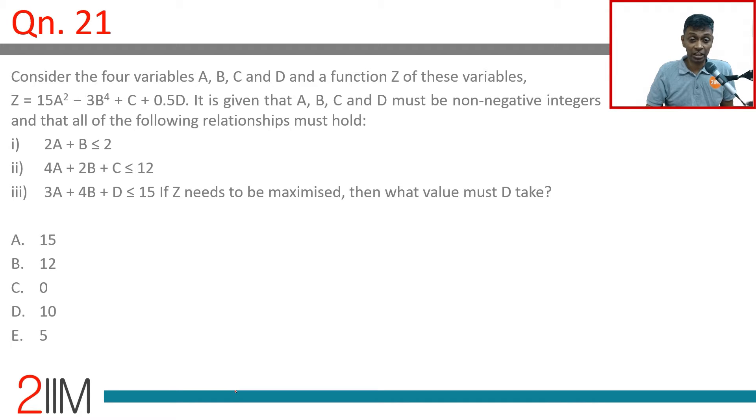Consider those four variables A, B, C, and D and a function of these variables: Z = 15A² - 3B⁴ + C + 0.5D. It is given that A, B, C, and D must be non-negative integers and that all of the following relationships must hold.